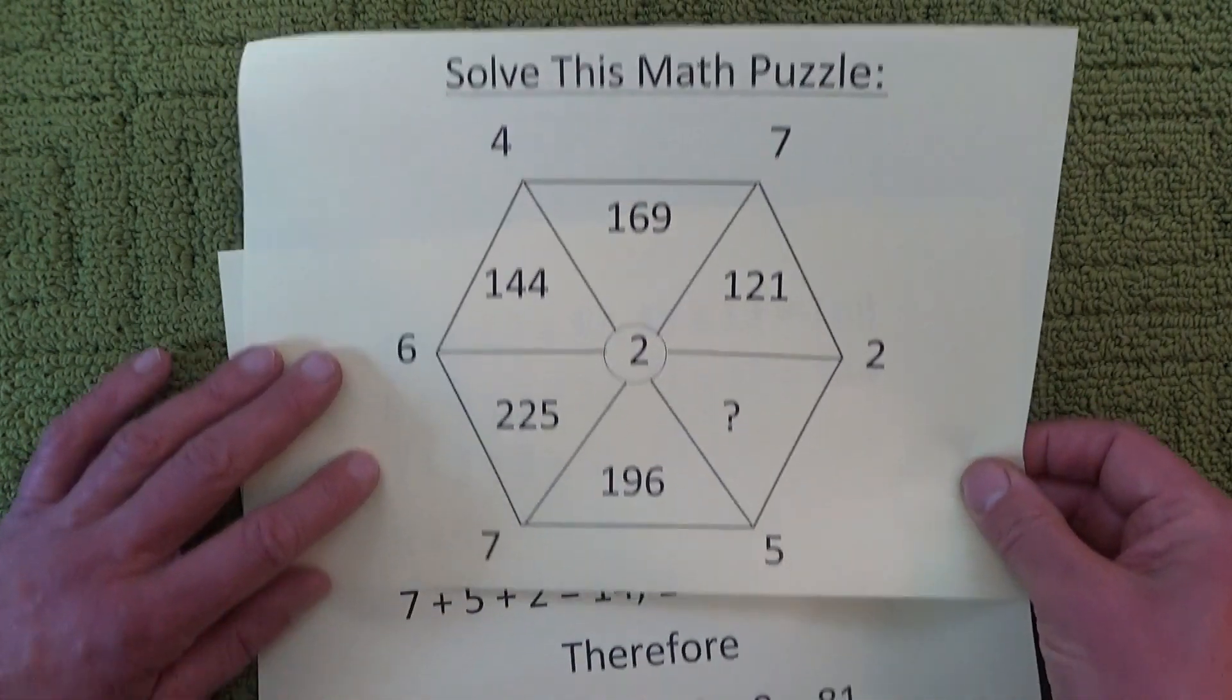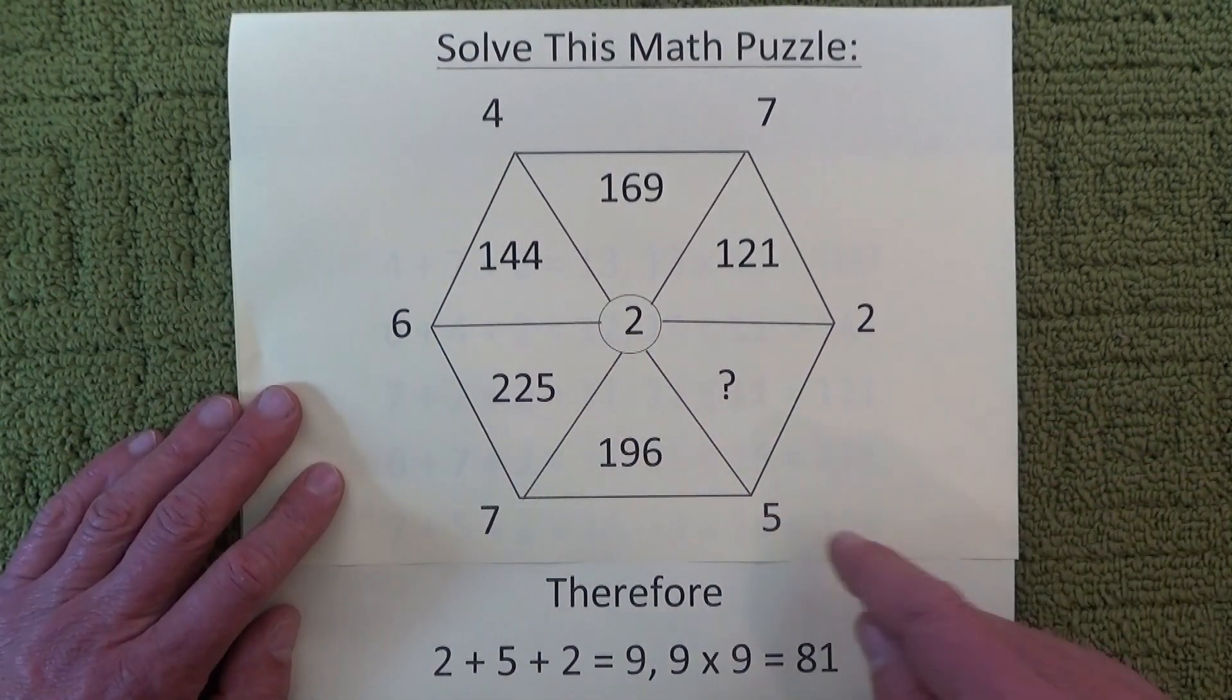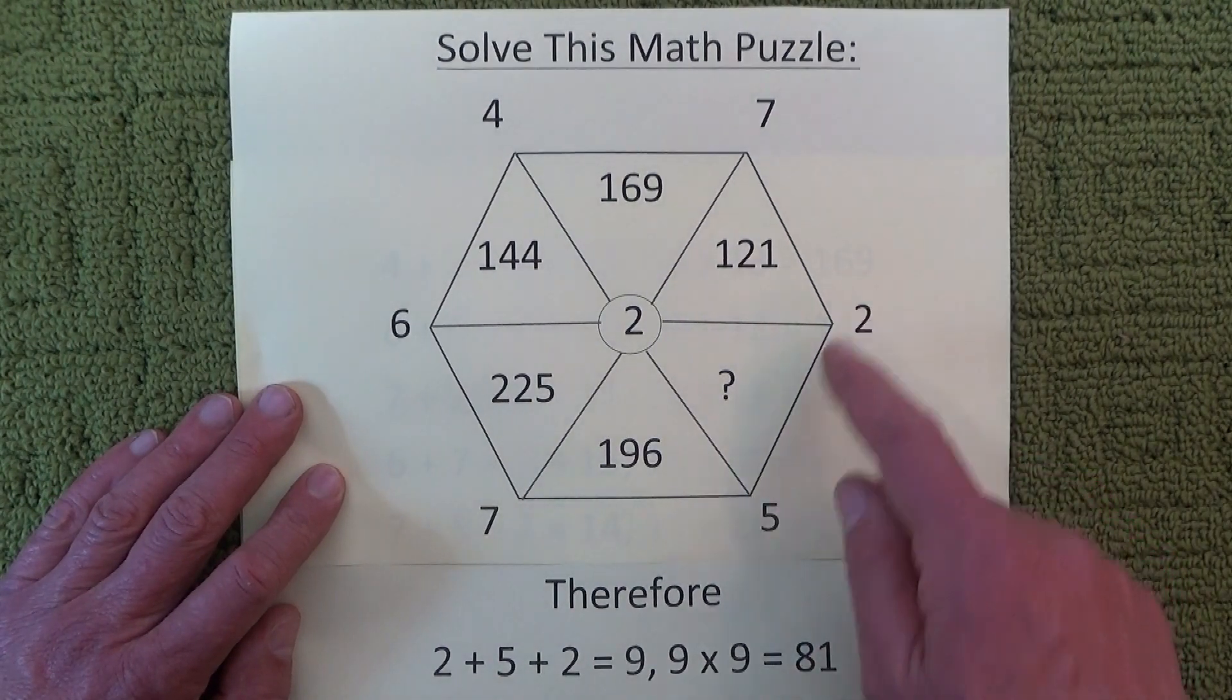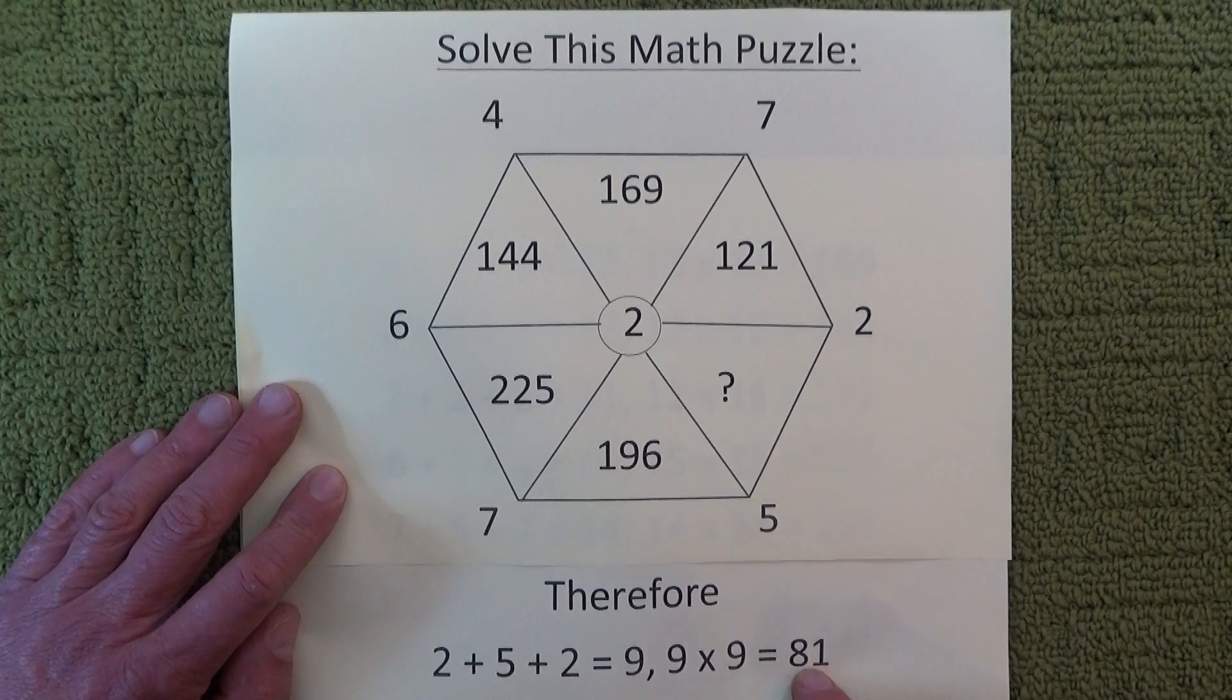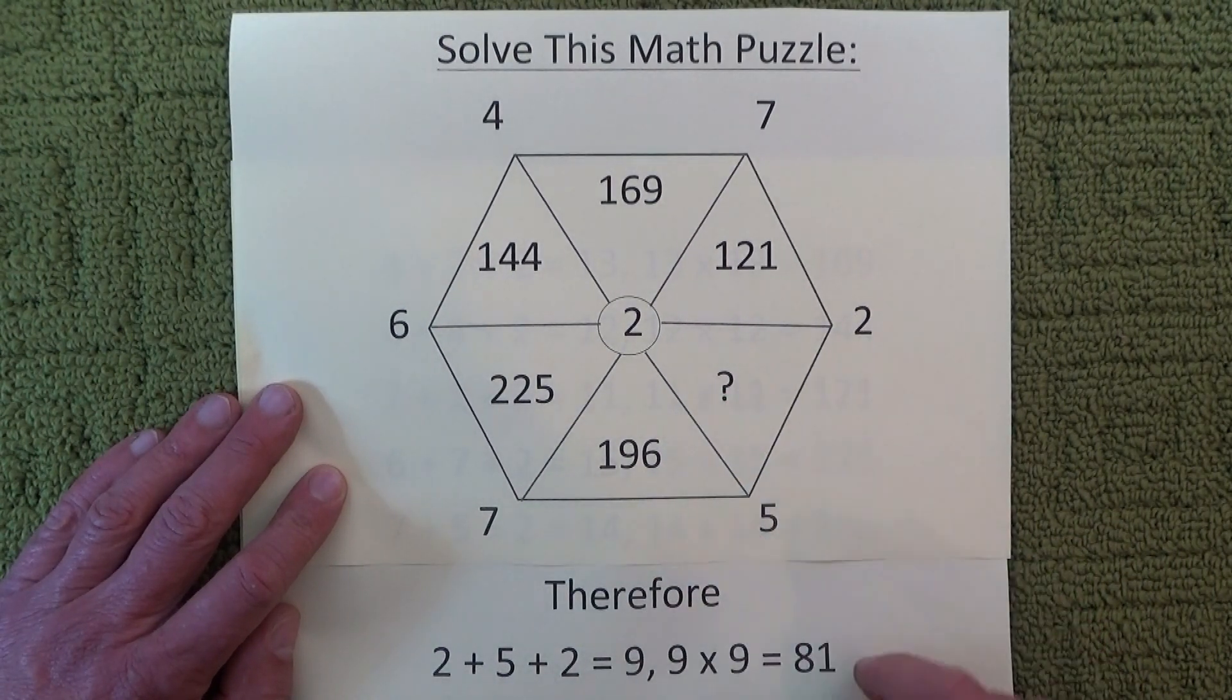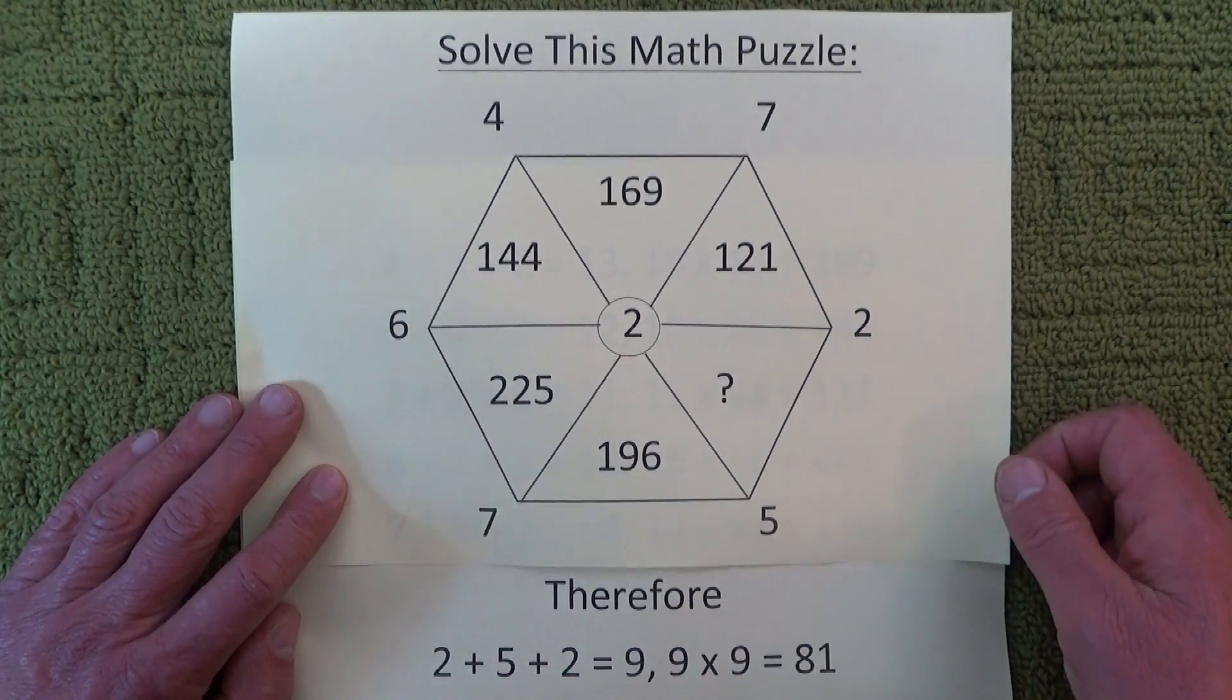Therefore, the answer to the puzzle is 2 plus 5 plus 2 equals 9, 9 times 9 equals 81. Therefore the missing number there is 81, and that's the answer to this puzzle.